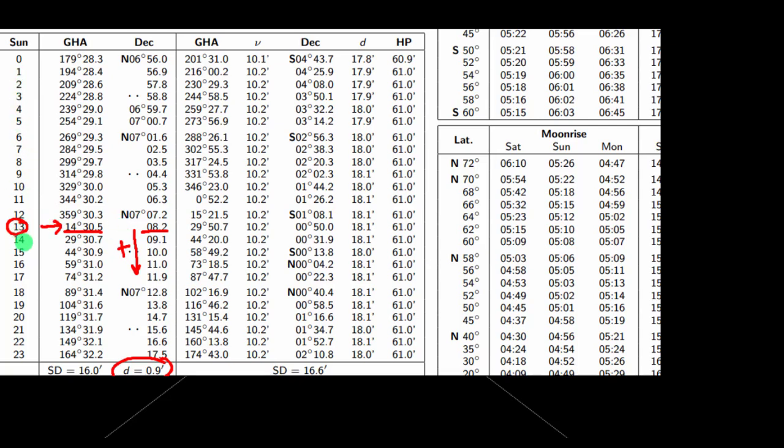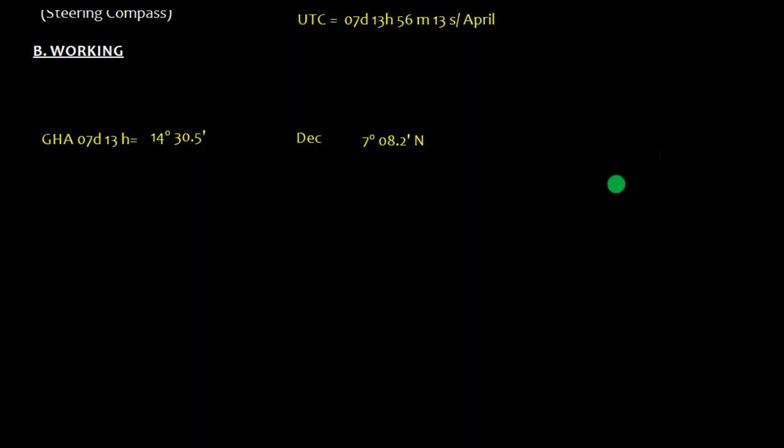For the date and 13 hour, we see that GHA of the sun under the column of sun is 14 degree 30.5, and the declination is not 7 degree, it is 8.2. You need to note down this d correction also, which is 0.9. If you see carefully, this is 8.2, this is 9.1 and 10, so the declination is increasing, so we need to add this correction.